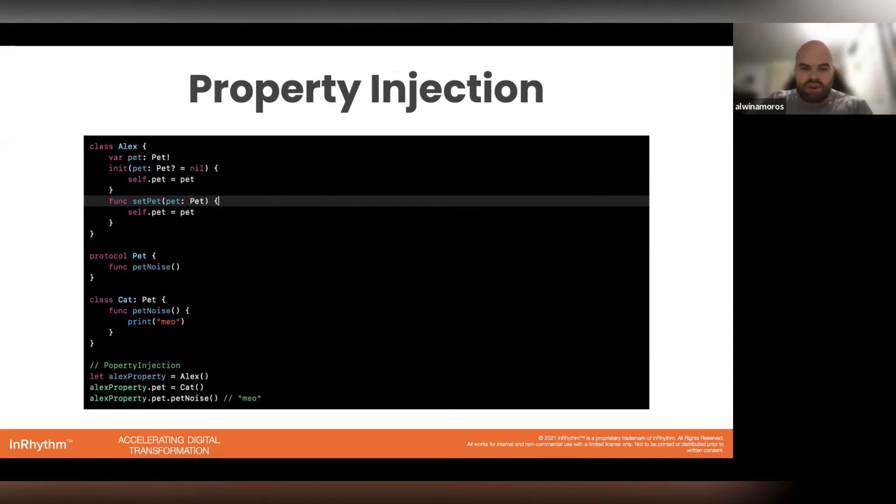The next one that we have is a property injection. Once you initialize your class Alex, you call in your variable pet and you instantiate the class that follows the protocols of pet and assign it to pet.